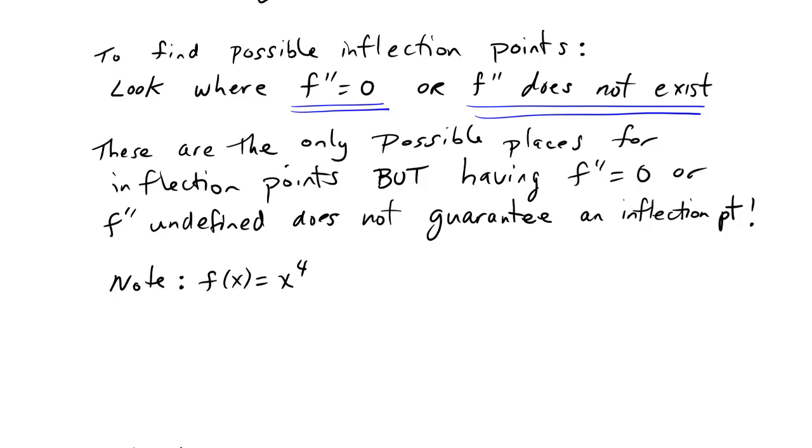So these are the only possible places for inflection points. But having the second derivative equal zero or the second derivative undefined does not guarantee an inflection point. Just like with the first derivative we build up these candidates to be inflection points but they have to be checked.